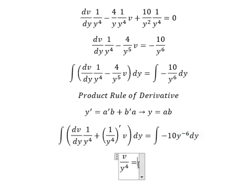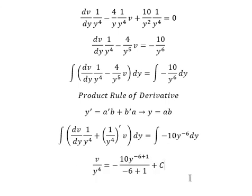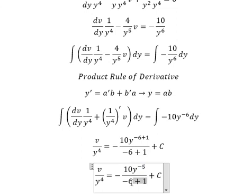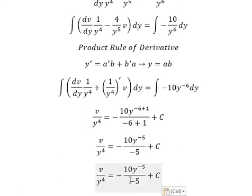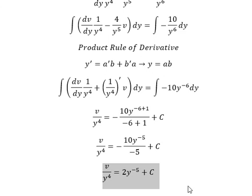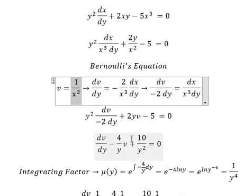And now we have the final answer. The exponent here gives negative 5, and this one also gives negative 5. So negative 10 divided by negative 5 gives us positive 2. About v, that refers to this expression here.